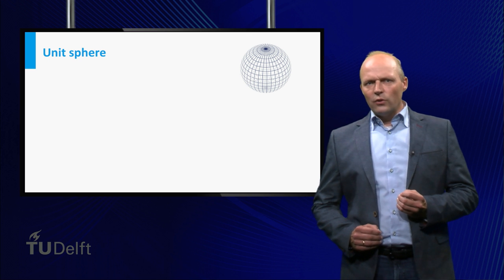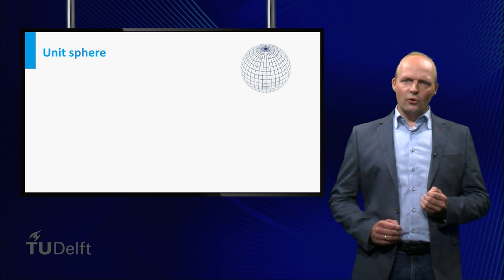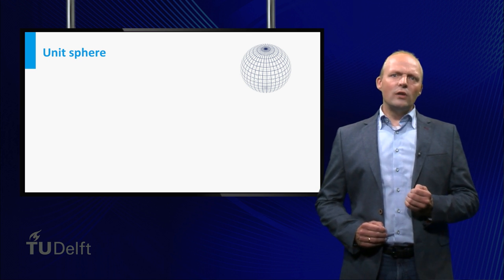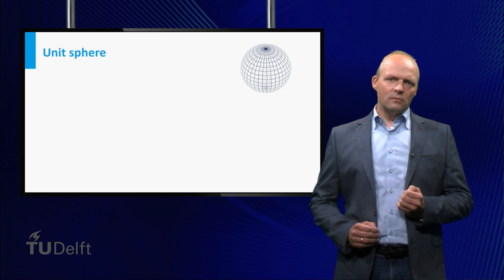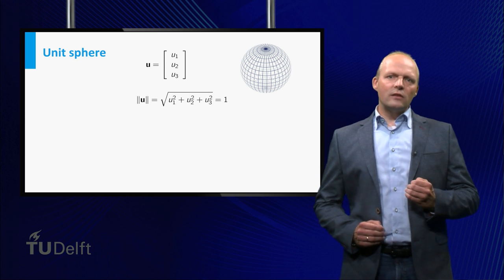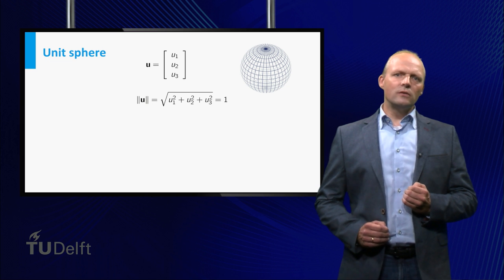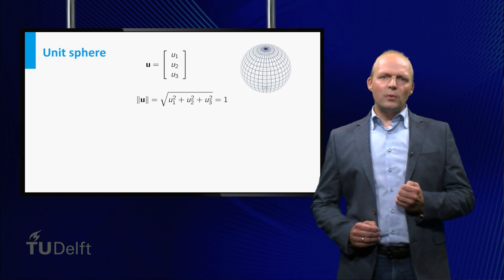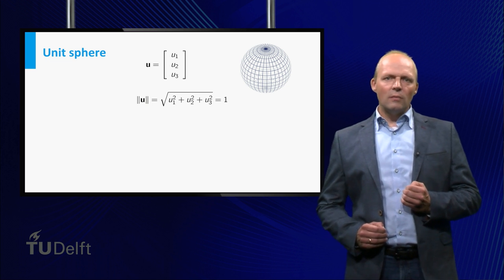In two dimensions we saw that all unit vectors end on the unit circle. Where are the unit vectors in three-dimensional space? So where can the vectors with length 1 be found? You won't be surprised that the answer is given by the unit sphere.